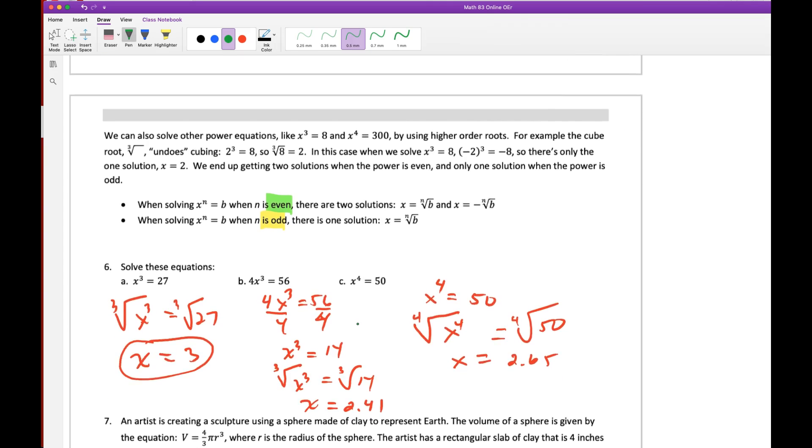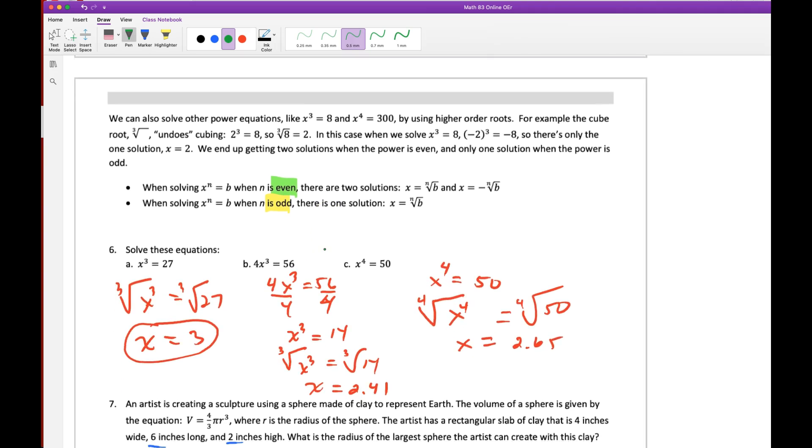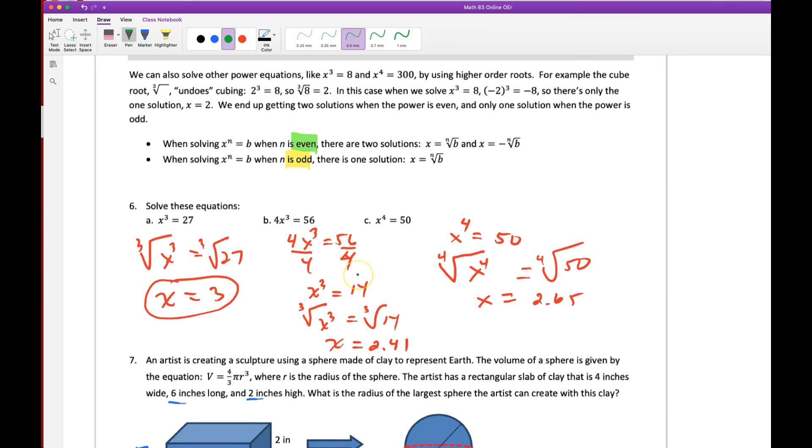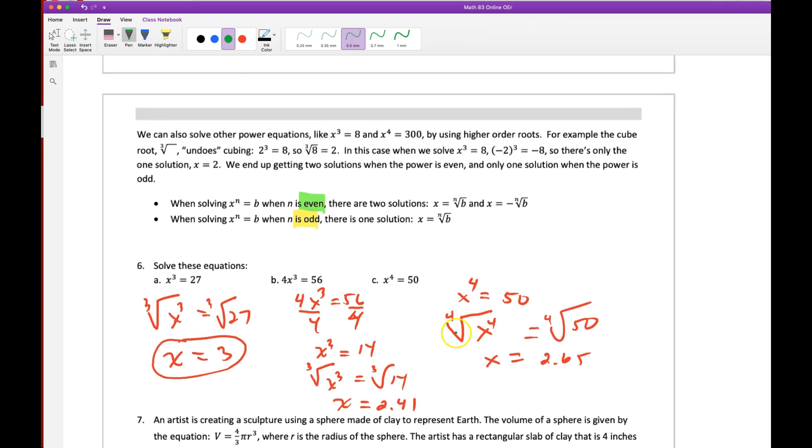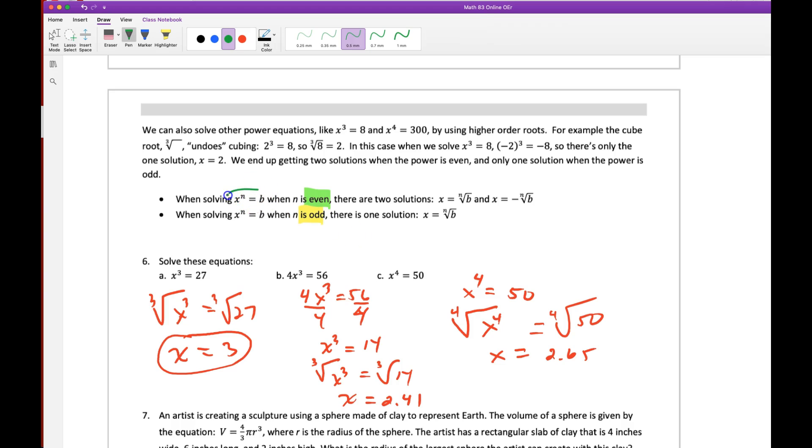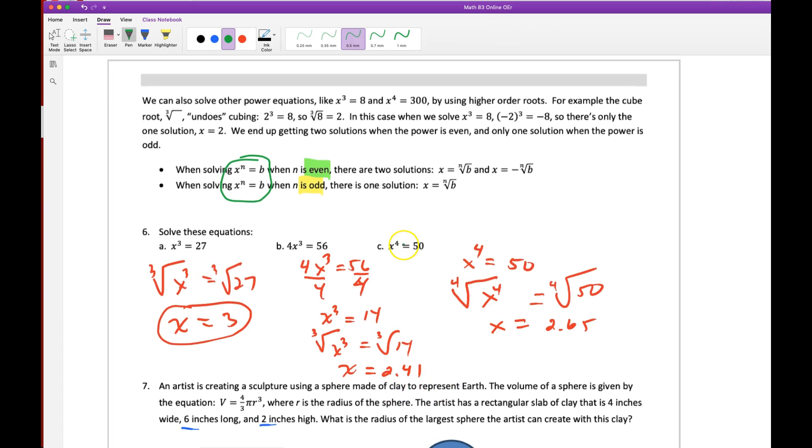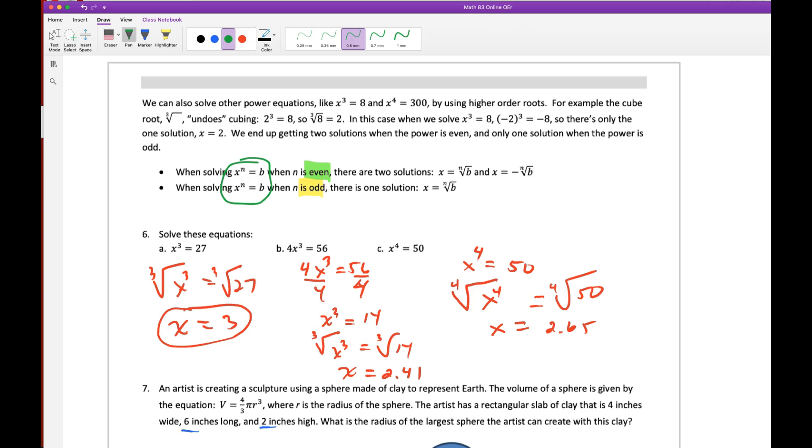We end this unit solving other types of power equations other than quadratics. We're not going to take the square roots. We take cube roots, fourth roots. And again, it all depends upon what the exponent is. So these are different questions here. What multiplied with itself 3 times equals 27? That equals 3. And so then we would end up having to take the cube root of both sides. Here, divide by 4, and then take the cube root. What multiplied with itself 4 times equals 50? So it's hard to do that in your head. We need a calculator to do that. Let me show you what that looks like on Desmos.